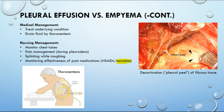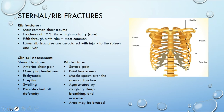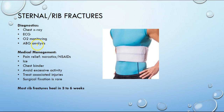Trauma-related conditions can include rib fractures. Diagnosis uses chest X-ray, ECG, O2 monitoring, and ABG analysis. Most rib fractures heal on their own in three to six weeks. Management is usually monitoring pain, ice, and a chest binder. Avoid excessive activities, watch for associated injuries, and note that surgical fixation is very rare.